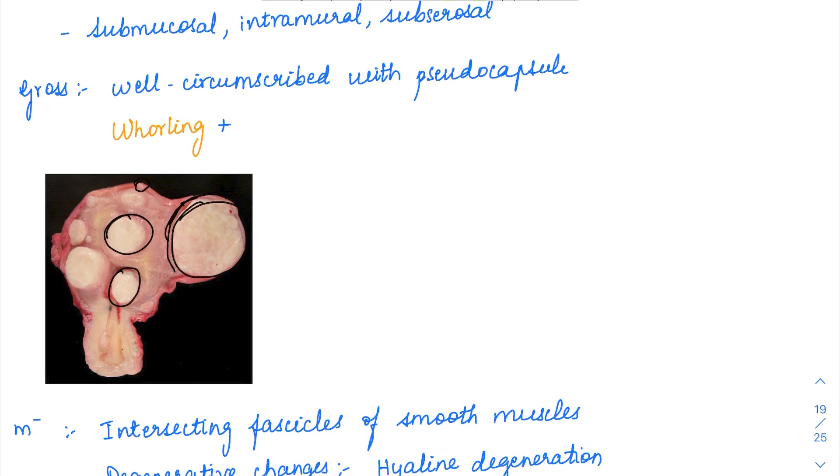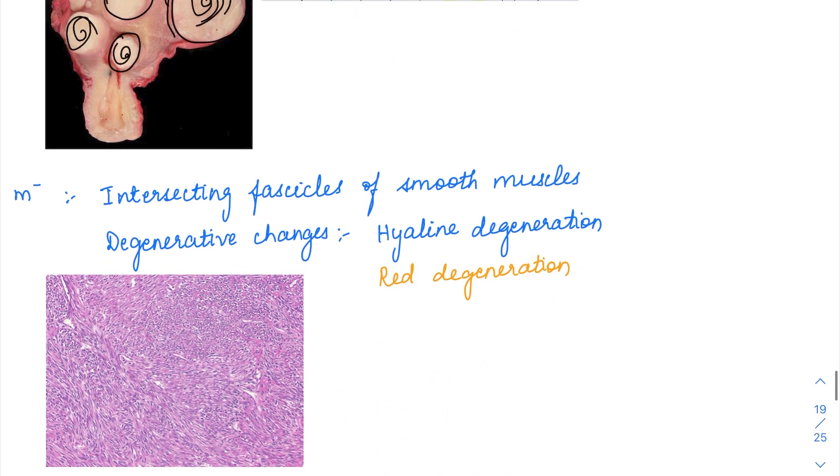The classical image of fibroids shows a whirling appearance. If you can appreciate in this image, the whirling pattern is present. Leiomyomas are known to show this whirling appearance.